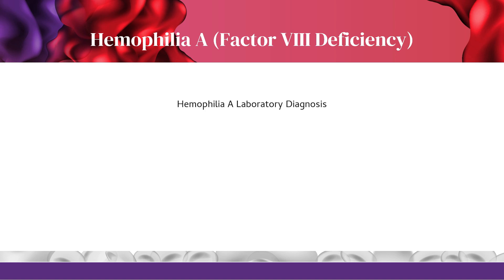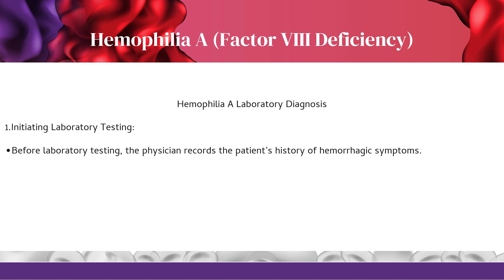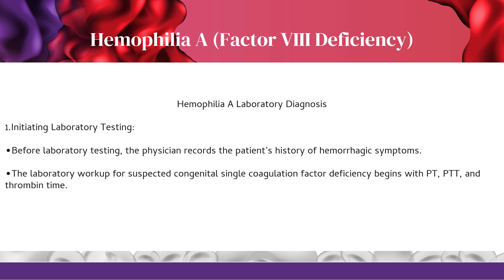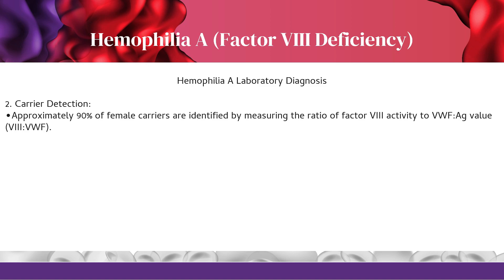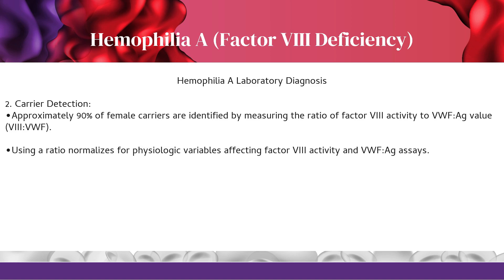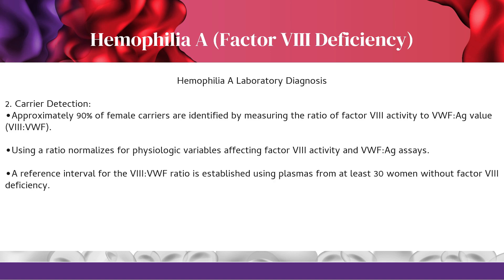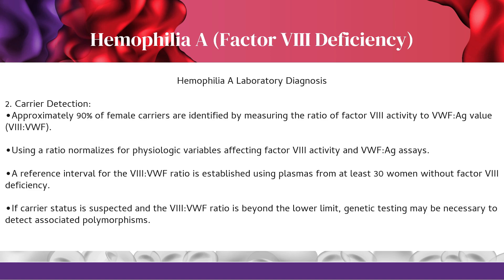Hemophilia A laboratory diagnosis: The physician first records the patient's history of hemorrhagic symptoms. The laboratory workup for suspected congenital single coagulation factor deficiency begins with PT, PTT, and thrombin time. Approximately 90% of female carriers are identified by measuring the ratio of factor 8 activity to VWF-AG value (8:VWF). Using this ratio normalizes for physiologic variables. A reference interval is established using plasmas from at least 30 women without factor 8 deficiency. If carrier status is suspected and the 8:VWF ratio is beyond the lower limit, genetic testing may be necessary.